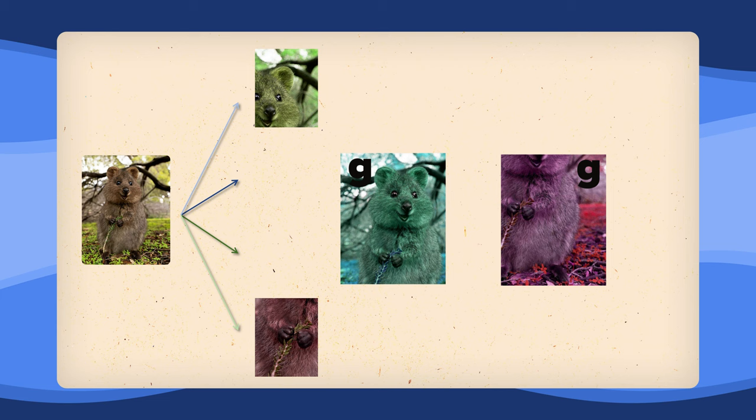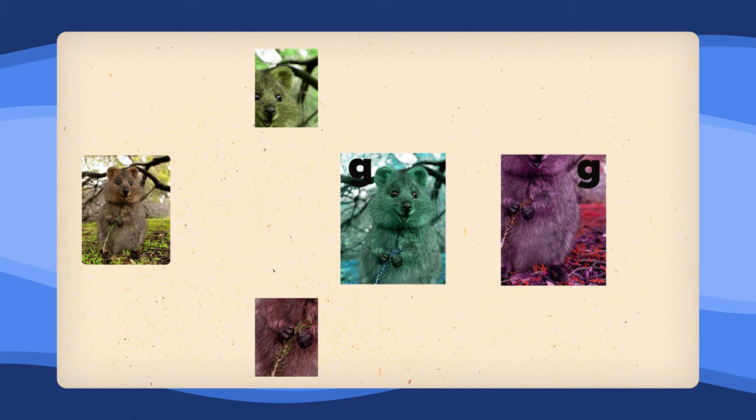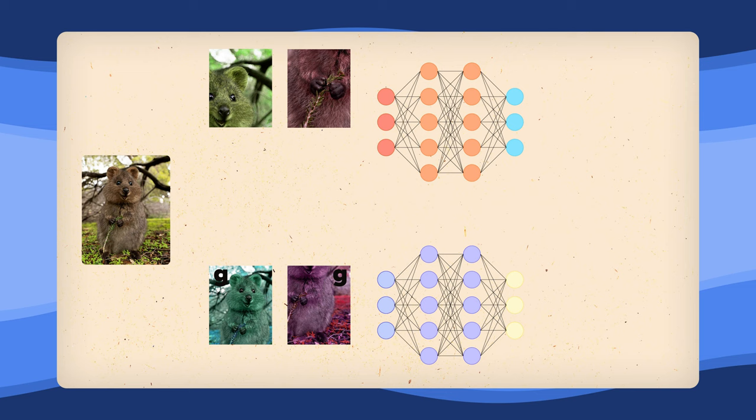When assigning our views to the two branches, for the teacher, we specifically want to use only our global views. And for the student, we'll use all views. In other words, the local and global cropouts.